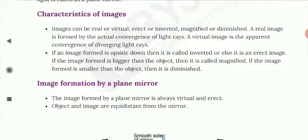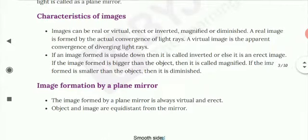A virtual image is the apparent convergence of diverging light rays. If an image formed is upside down, then it is called inverted, or else it is an erect image. If the image formed is bigger than the object, it is called magnified. If the image formed is smaller than the object, it is called diminished.